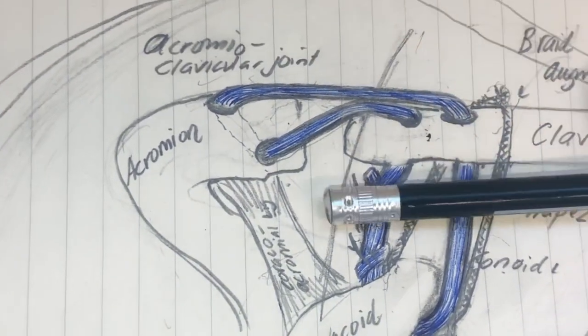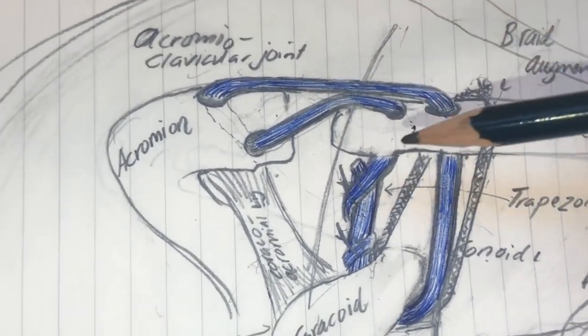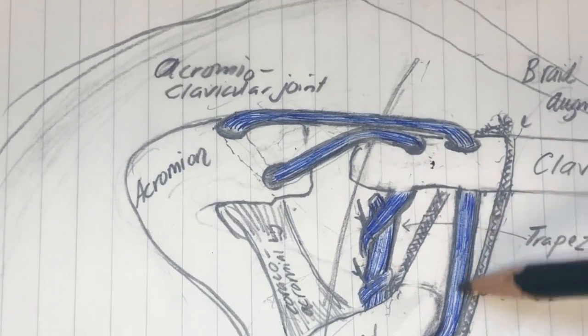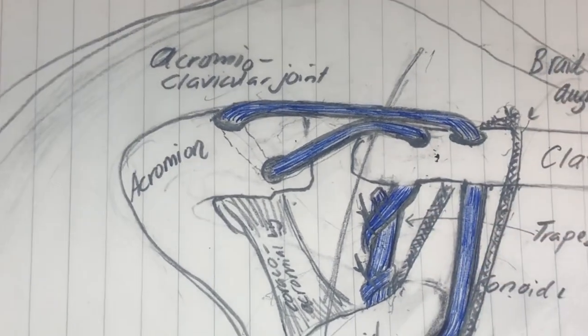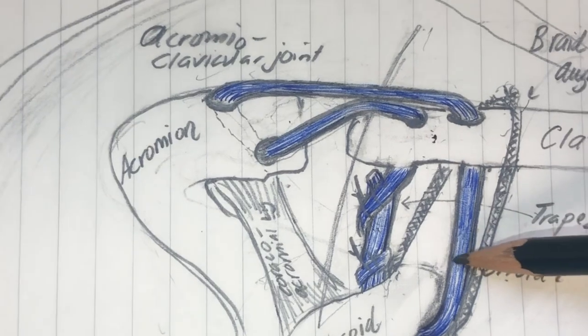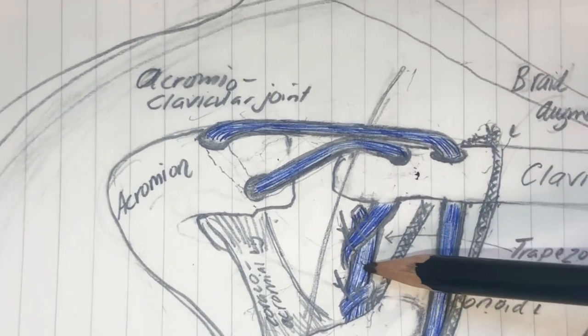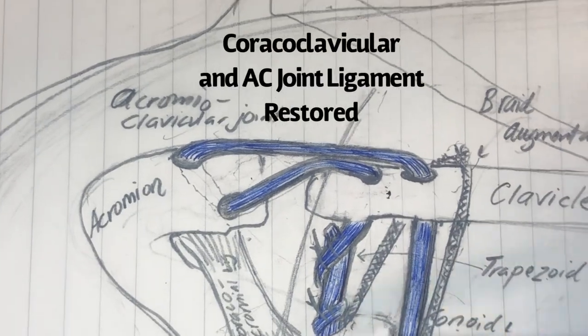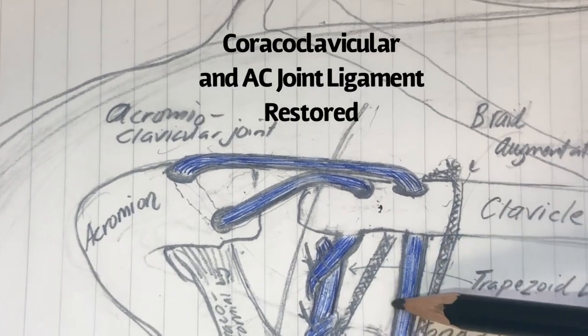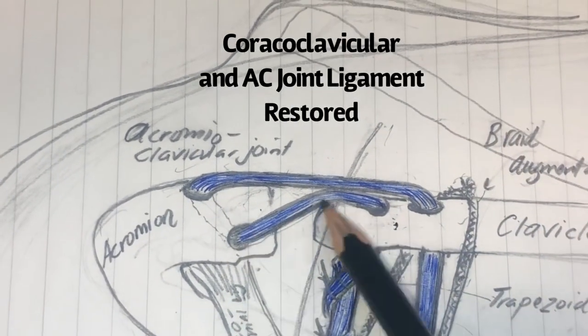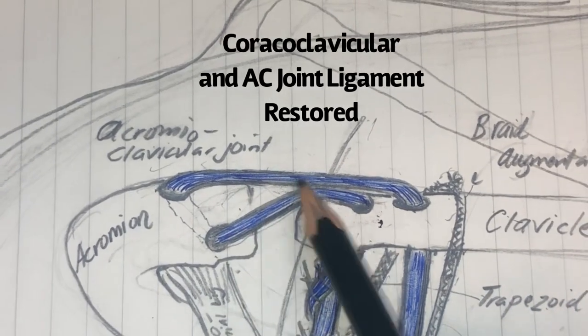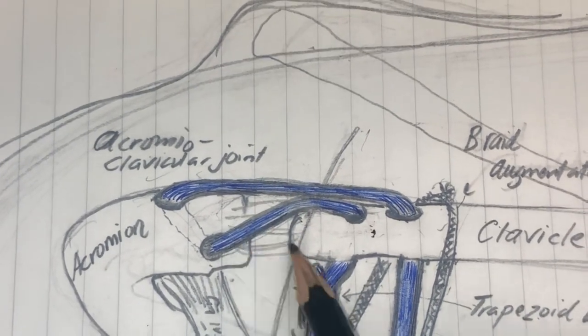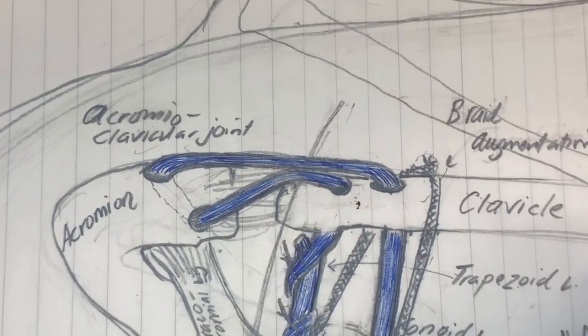And over time, what will happen is this limb and this limb will basically replace the conoid ligament and the trapezoid ligament, both of which are part of the CC ligaments or the coracoclavicular ligament complex here. And then these two strands will recreate the acromioclavicular joint or acromioclavicular ligament that was also torn.